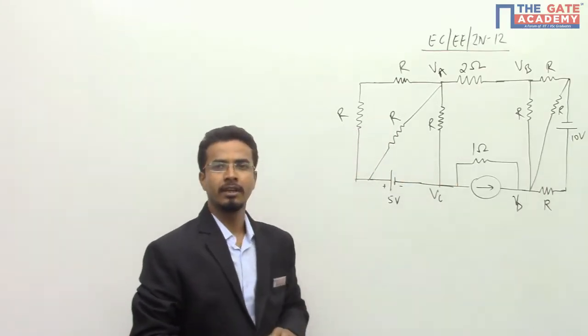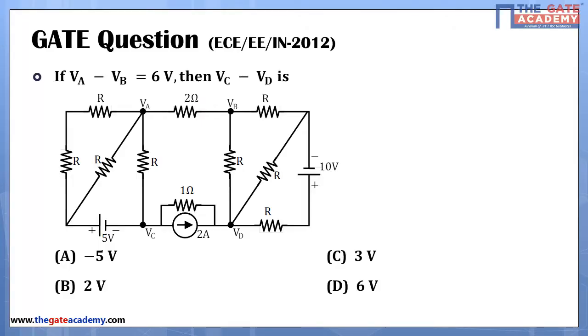This is the next question and in this question they have provided that VA minus VB is equals to 6 volt. So what is the value of VC minus VD?